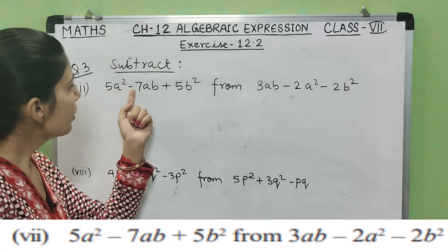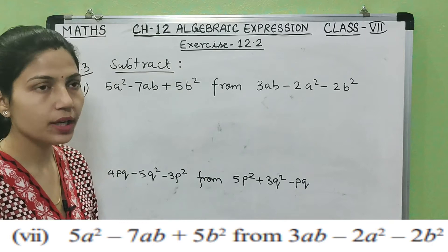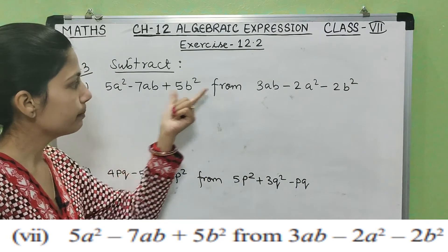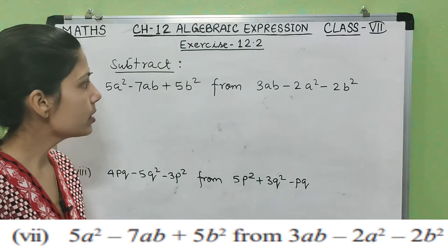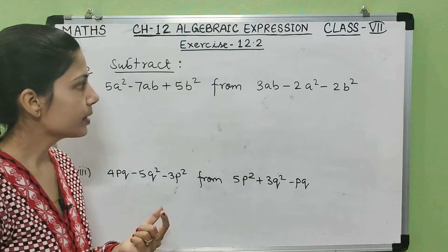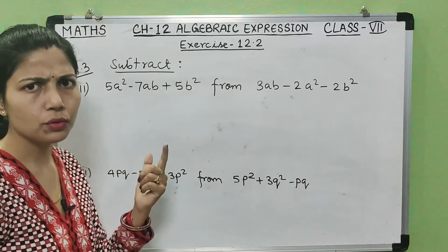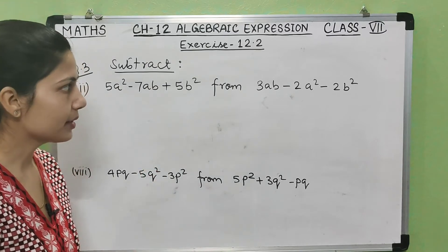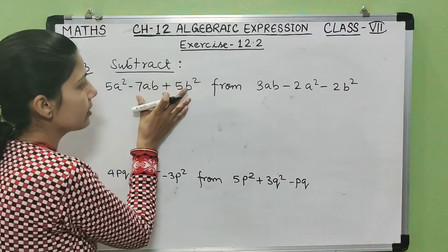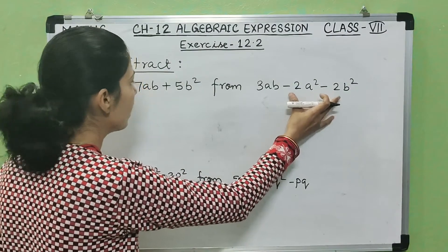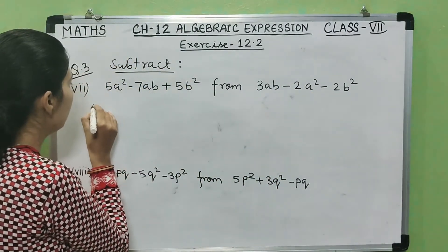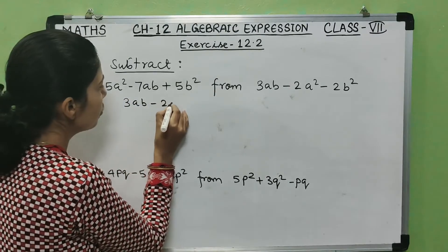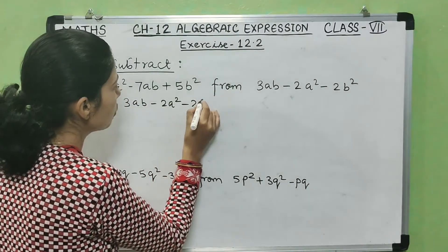The seventh part: subtract (5a² minus 7ab plus 5b²) from (3ab minus 2a² minus 2b²). Both expressions have three terms, so we use the column method. We write 3ab minus 2a² minus 2b² on top.